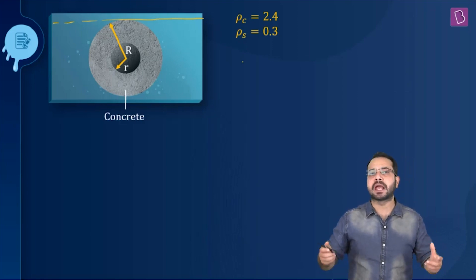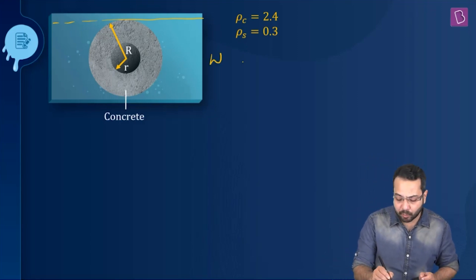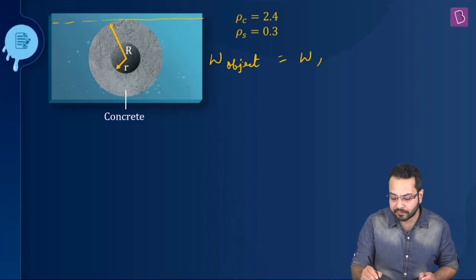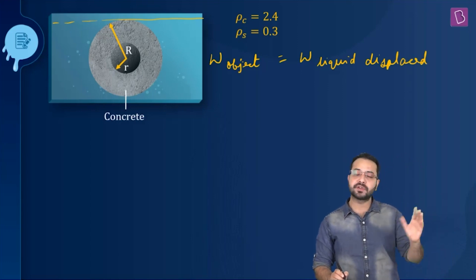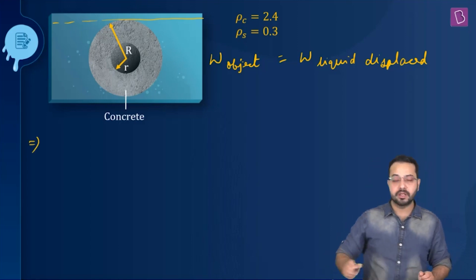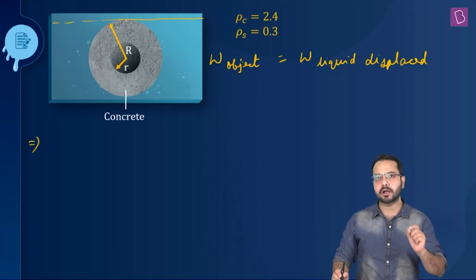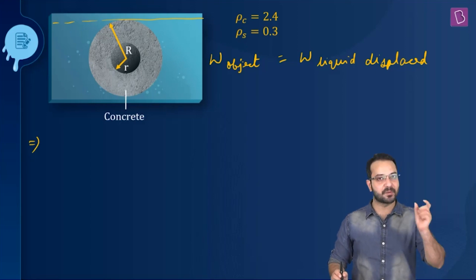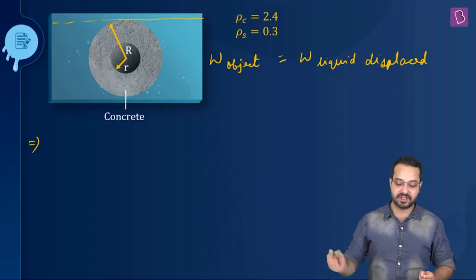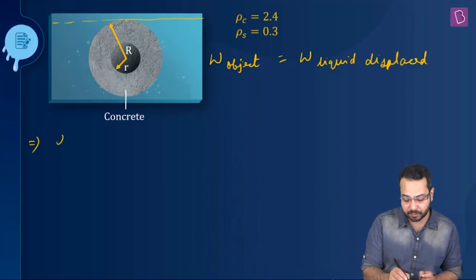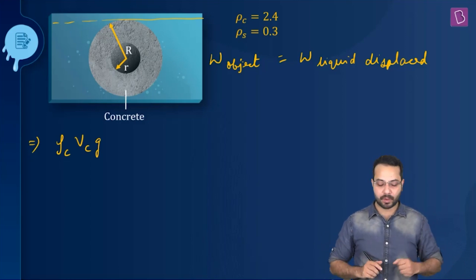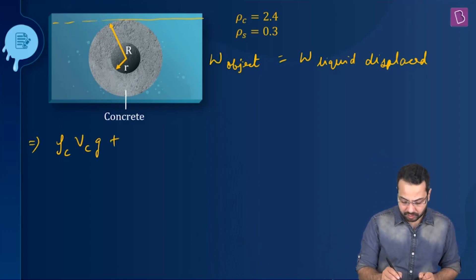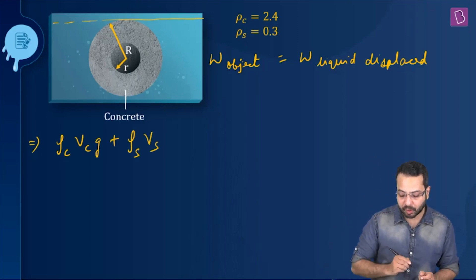If something is floating, we apply Archimedes' principle, which tells us that the weight of the floating object has to be equal to the weight of the liquid displaced. We need to find the weight of the object, which is the weight of the concrete part plus the sawdust part. Weight equals mass times gravity, and mass equals density times volume. So the weight is: density of concrete × volume of concrete × g, plus density of sawdust × volume of sawdust × g.